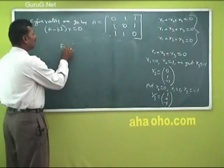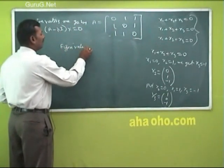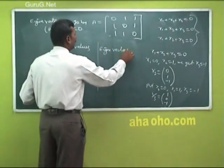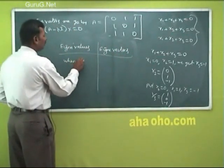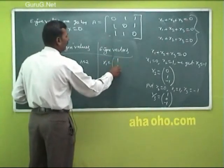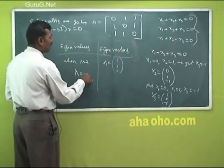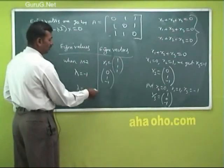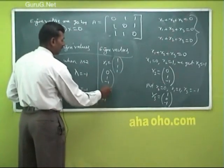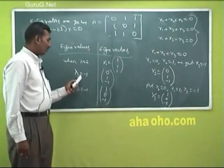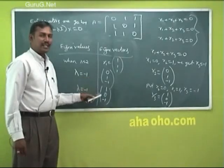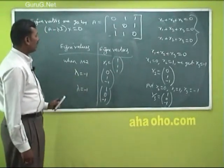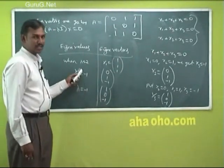Writing it in a table — eigenvalues and eigenvectors: when lambda equal to 2, eigenvector x1 is [1,1,1]. When lambda equal to minus 1, one eigenvector is [0,1,minus 1]. Again lambda equal to minus 1, another eigenvector is [1, 0, minus 1]. So for one repeated eigenvalue you may get distinct eigenvectors. The eigenvalues here are repeated: one is distinct, the other two are repeated.